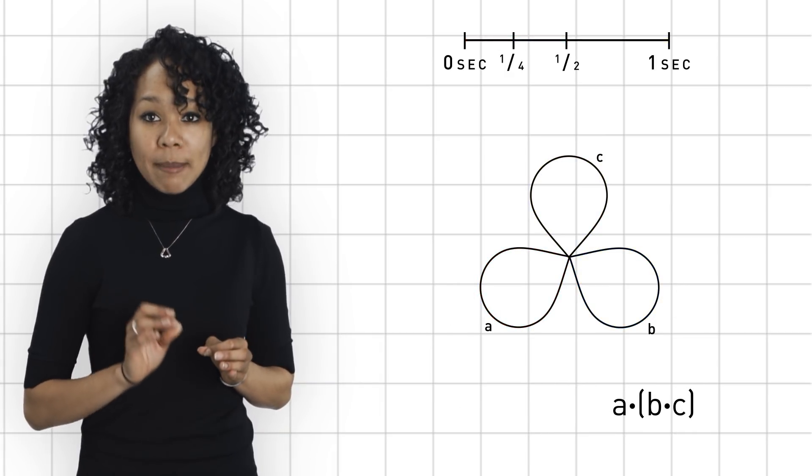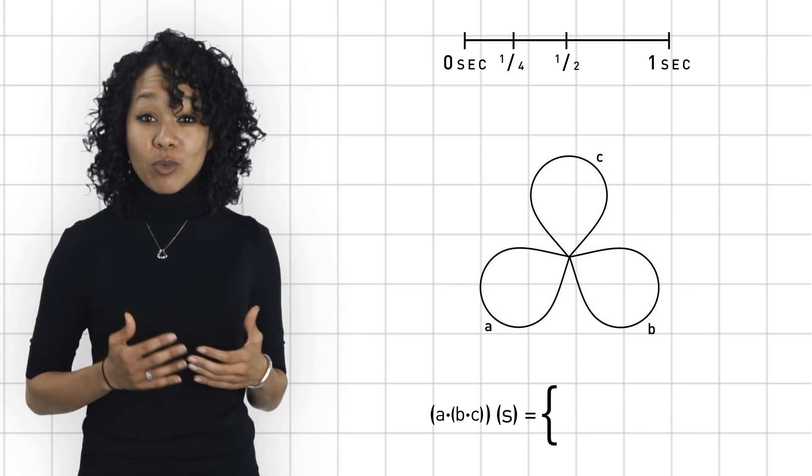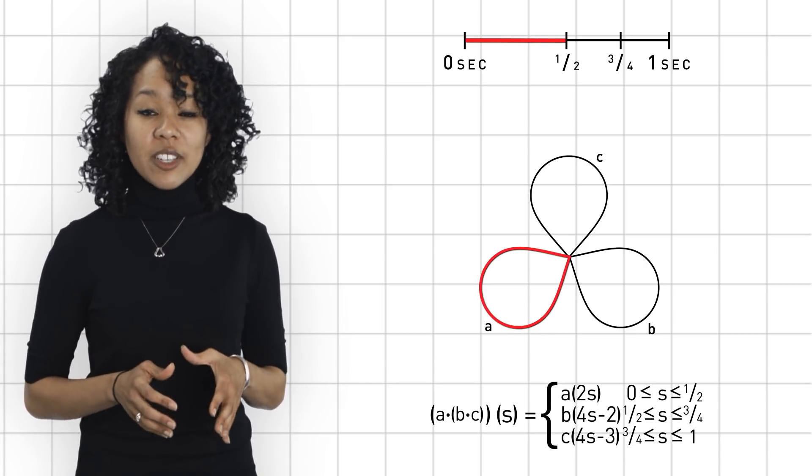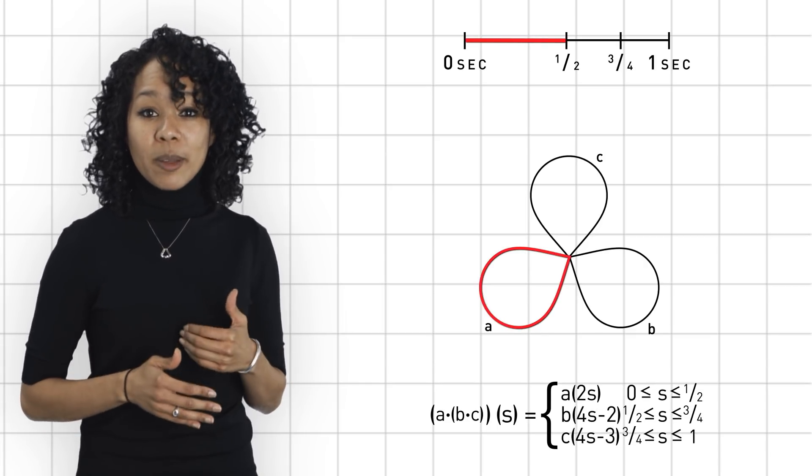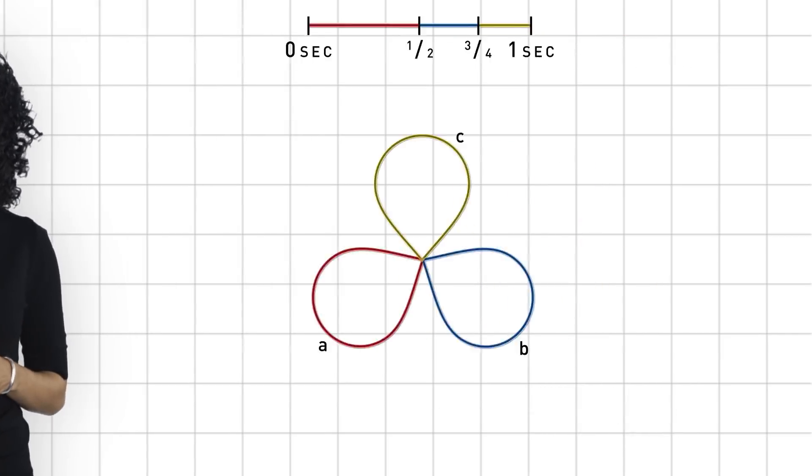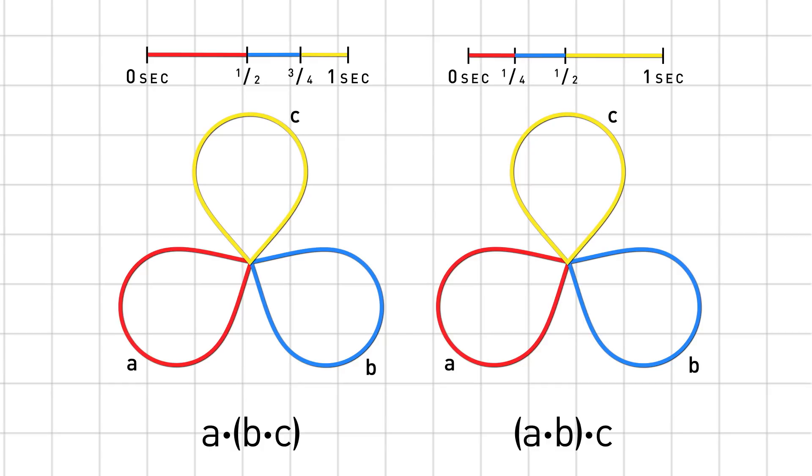Now, what about (A times B) times C? Well, here the roles are slightly reversed. The red car goes a little slower now. It travels in the first half second, while the blue and yellow cars go around B and C in the last two quarters. So, are these two loops equal? Well, the pictures look the same, but the time in which each car does its traveling is different. In short, their formulas are not equal, so no, they're not the same. Therefore, loop concatenation is an example of a product that is not associative.